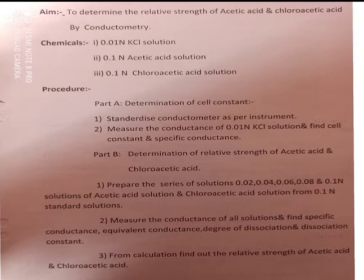Part B is the determination of relative strength of acetic acid and chloroacetic acid. First, prepare a series of standard solutions — 0.02, 0.04, 0.06, 0.08, and 0.1 normal solutions of acetic acid. Same way, prepare solutions of monochloroacetic acid from the 0.1 normal standard solution. Measure the conductance of all solutions and find out specific conductance, equivalent conductance, degree of dissociation, and dissociation constant.